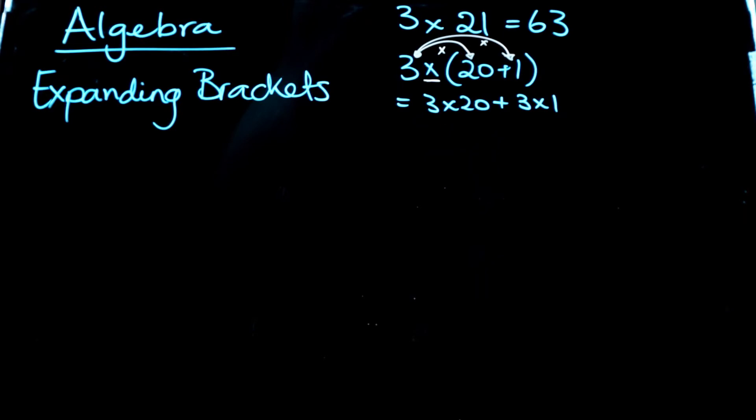And if we do the maths here, crunch the numbers, 3 times 20 plus 3 times 1, 60 plus 3 is 63. So I think in the introduction I referred to these little arrows that I'm drawing as a training wheel.